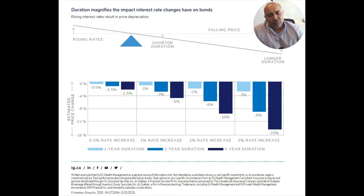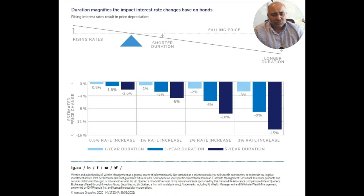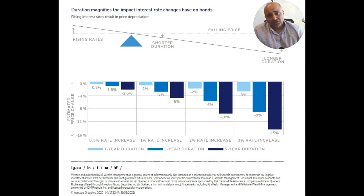Because different bond funds have reacted differently to those economic factors, it is important to diversify across asset classes. This can include combining short-term bonds, which tend to be less interest rate-sensitive than long-term bonds. This will help shield your portfolio from interest rate uncertainties.